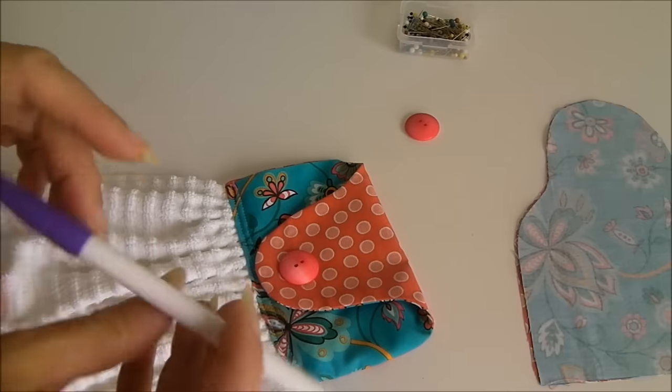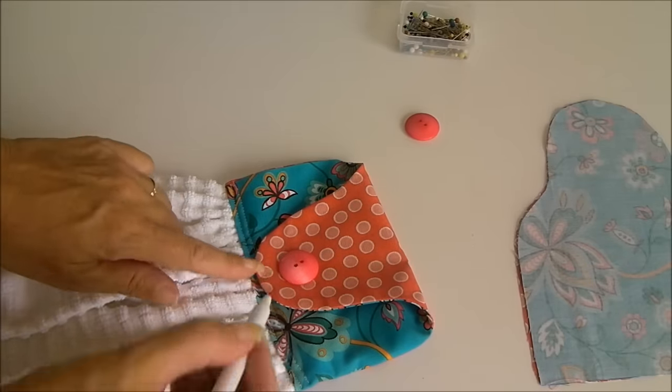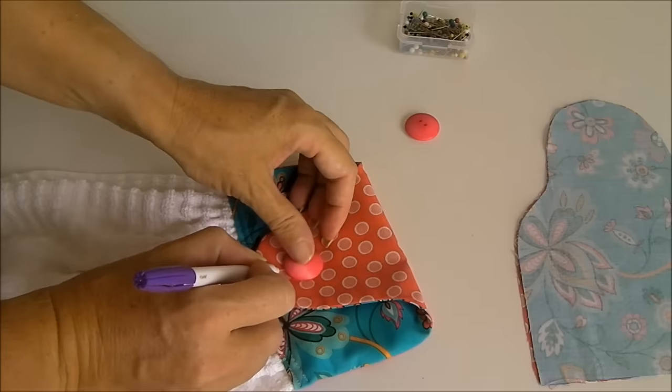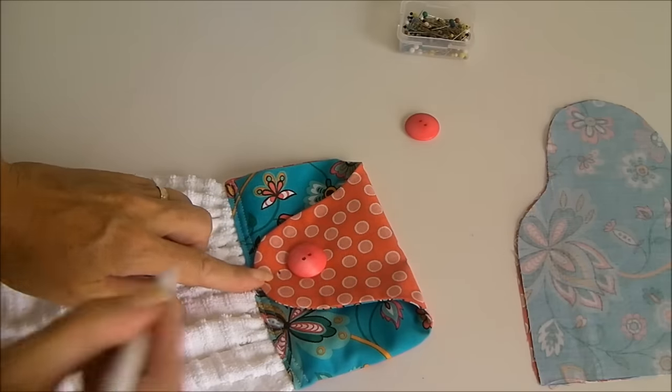This one is, it just disappears over time. It's a disappearing ink marker, especially used for fabrics. I'm just going to put a little mark there. That's where I'm going to want my buttonhole to start.